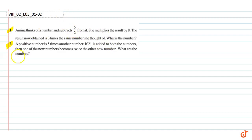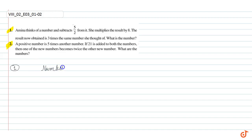Let's say Amina thought of number x. We assume the number is x. Now she subtracts 5 by 2 from it, so now we have x minus 5 by 2.